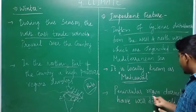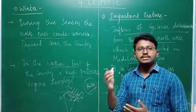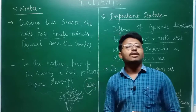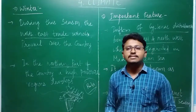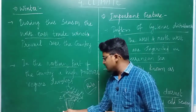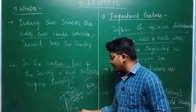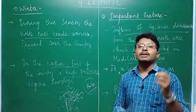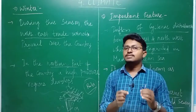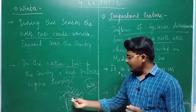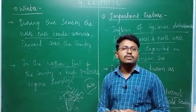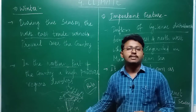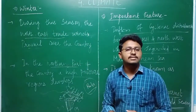The peninsular region does not have a well-defined cold season. This peninsula region lies just below the northern plains. The reason is that it is surrounded on three sides by water — the Arabian Sea, Indian Ocean, and Bay of Bengal. Since water surrounds it, there are moderate temperatures, and there is not much change from season to season. Therefore, this region experiences only a moderate, not well-defined, cold season.